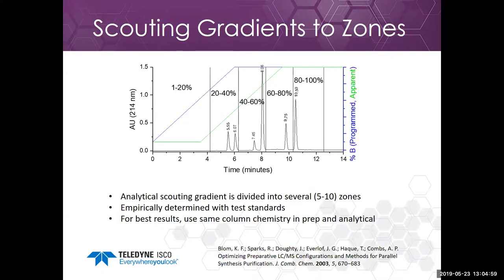The first one I'm going to talk about is something called the zone technique. What we do is divide the scouting gradient into a number of zones, and each of these zones represents a focused gradient. We divide the scouting gradient into several zones, typically five of them. Each zone is empirically determined with test standards. All of these techniques require you to use the same column chemistry in prep and analytical. If you use a RediSep C18 column for your analytical run and you have a different column on your prep system, you might not get very good results because the column selectivity is different.